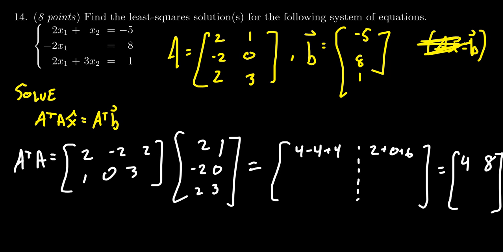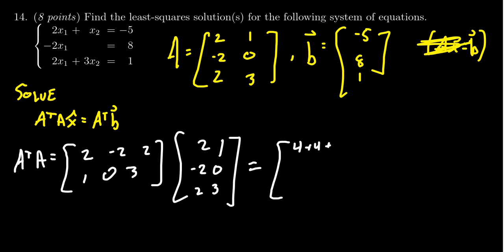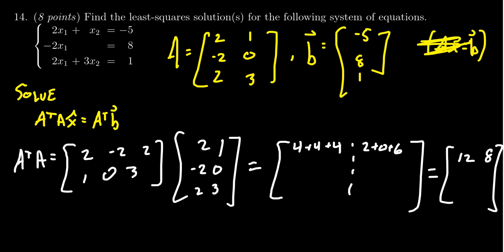Starting again: computing A transpose A is the same as taking dot products among all possible columns of A. The dot product of the first column of A with itself gives 4 plus 4 plus 4, which is 12. The dot product of the first column with the second gives 2 plus 0 plus 6, which is 8. Since A transpose A is always symmetric, the off-diagonal entries are both 8. The dot product of the second column with itself gives 1 plus 0 plus 9, which is 10. So A transpose A equals [12, 8; 8, 10].